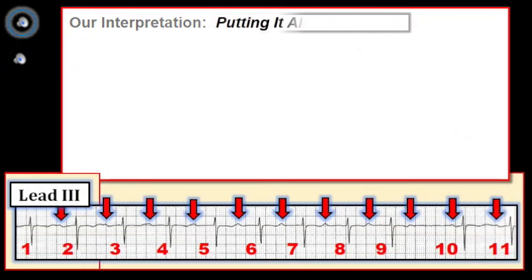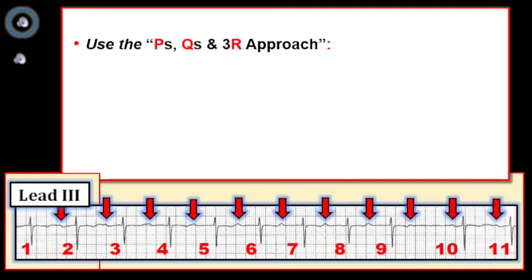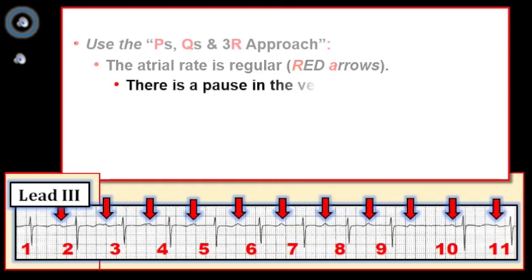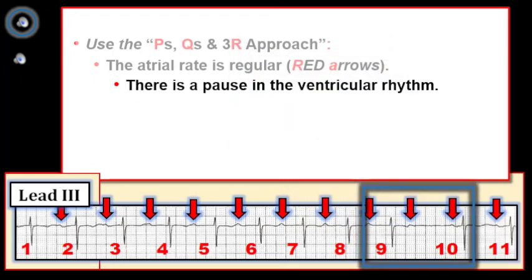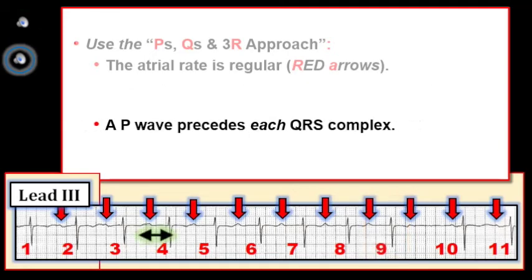Let's put it all together and interpret this rhythm strip. As with any cardiac rhythm, once we ensure the patient is stable, we remember to watch our P's and Q's and the three R's: presence of P waves, QRS width, rate, regularity of the rhythm, and the relation of any P waves to neighboring QRS complexes. The atrial rate is regular at about 70 per minute (red arrows). There is a brief pause in the ventricular rhythm between beats 9 and 10, the QRS is narrow — not more than half a large box in duration. A P wave precedes each QRS with a prolonged PR interval, and one P wave is not conducted (green arrow).